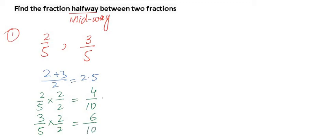Now if you observe between these two fractions, we can say 5 out of 10. How? Add 4 and 6 divided by 2, you will get 5. So 5 out of 10 is that fraction between 2 out of 5 and 3 out of 5.